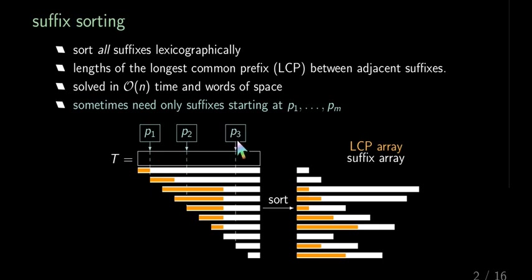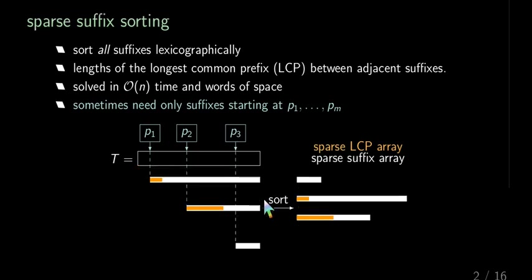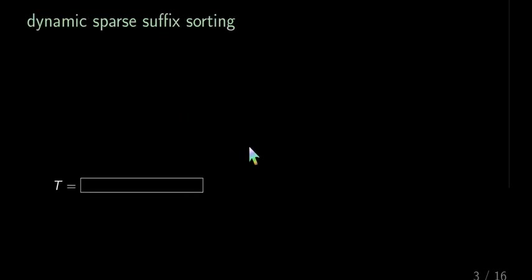We're only interested in the order of these suffixes, which is already given by the sparse suffix array. And analogously, we can define the sparse LCP array, meaning that it stores the LCPs between adjacent suffixes adjacent within the sparse suffix array. We additionally assume that these positions come in a dynamic order, meaning they come in online and arbitrary.